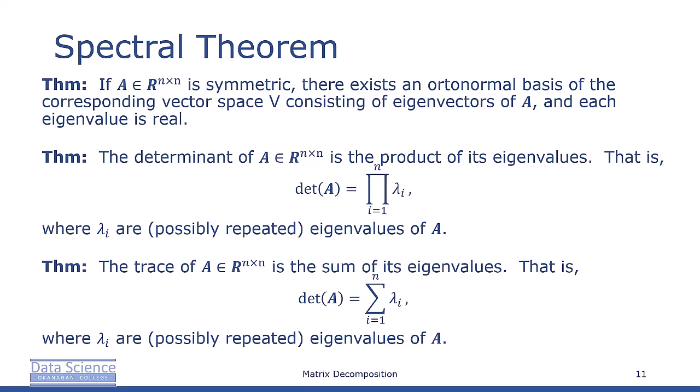Before concluding, it's useful to connect eigenvalues with the concepts of determinant and trace. The determinant of a square matrix A is the product of its eigenvalues — that is, the determinant of A equals the product of the lambda i's, where the lambda i's are the possibly repeated eigenvalues of A.